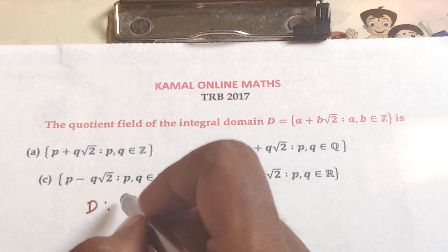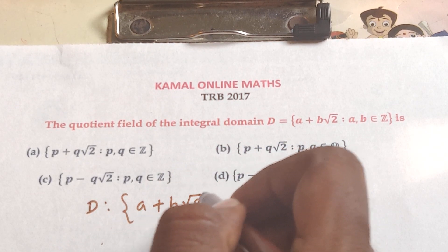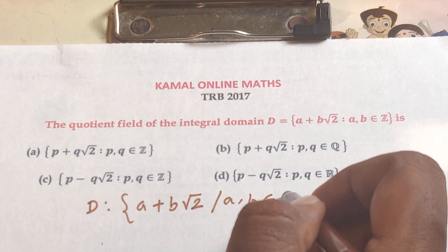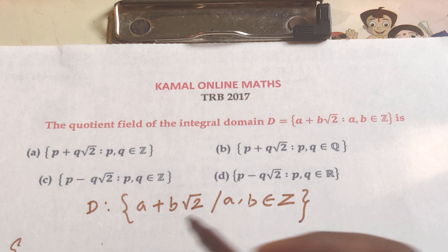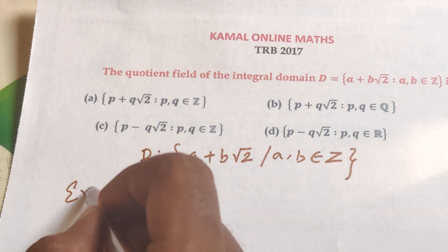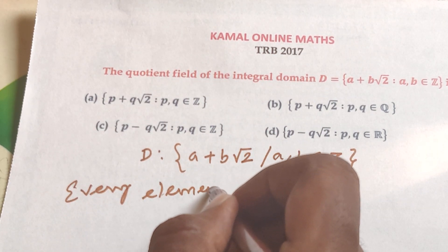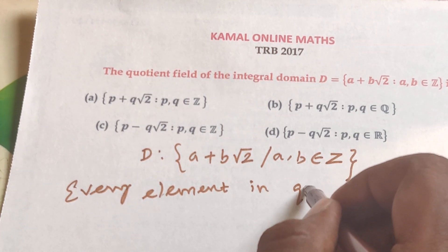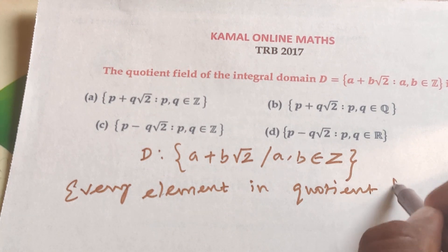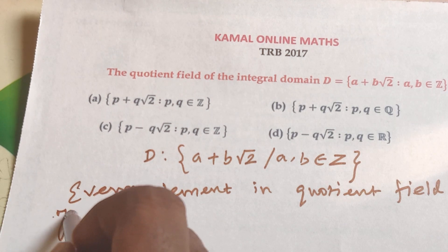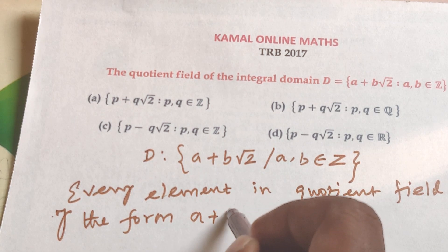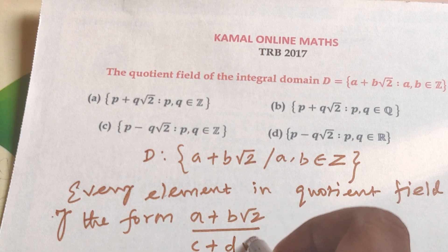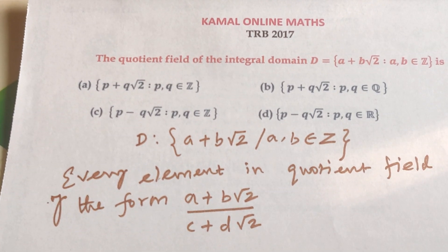D is the integral domain A plus B root 2 where A and B are elements of ℤ. To find the quotient field, an element is of the form A plus B root 2 divided by C plus D root 2, where C and D are integers — that is, numerator and denominator both from D.